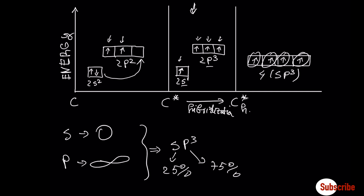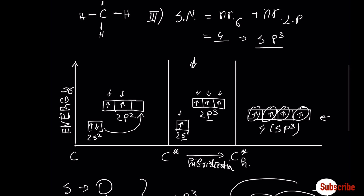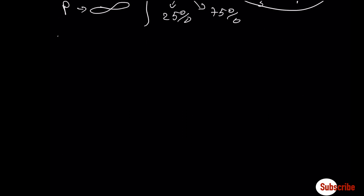How does it look when you combine these two together? It's a shape that combines s and p. If we draw it, it's going to be like this, and on the corners it's going to form sigma bonds with hydrogens. Let's move now to sp2 hybridization.